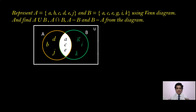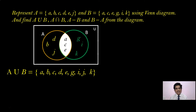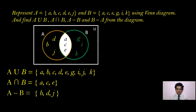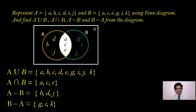Now reading from this diagram: A union B is the collection of all elements — A, B, C, D, E, G, I, J, K. A intersection B is the common region — A, C, E. A minus B is the left exclusive region — B, D, J. B minus A is the right exclusive region — G, I, K. This is how you draw and read the Venn Diagram to solve problems.